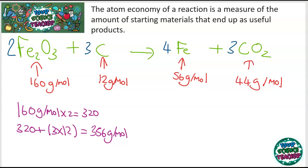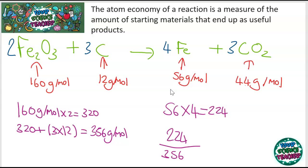When looking at this reaction, we said iron was the useful product — carbon dioxide is often a waste product. To calculate how much iron we have: 56 times 4 (because there are 4 moles) equals 224. To calculate the atom economy, you do the useful amount divided by all of the starting material: 224 divided by 356. Times by 100 to get a percentage — that equals 63% atom economy for this reaction.